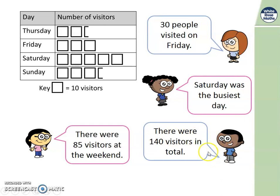This boy says Mia says there were 140 visitors in total - shall we check? Counting all the squares: 10, 20, 30... up to 135 and five more is 140. That's correct. Did you find out any other information? Well done if you did.